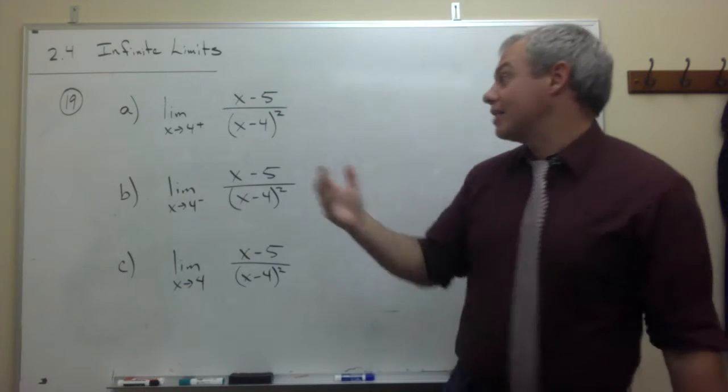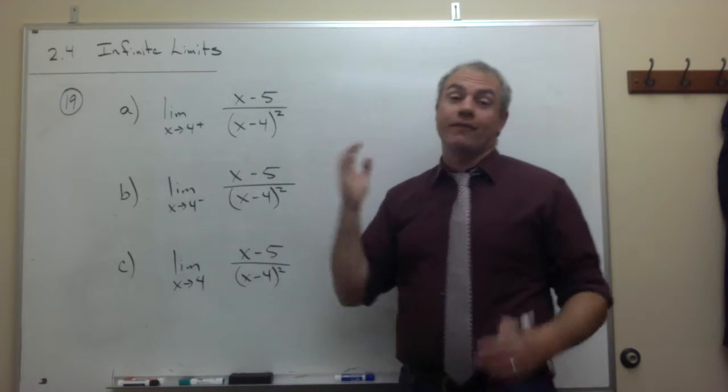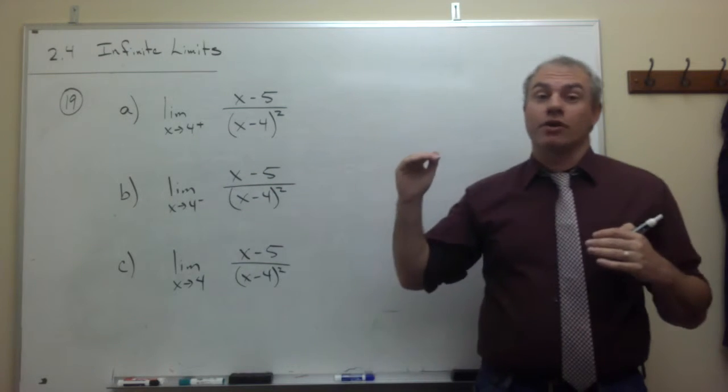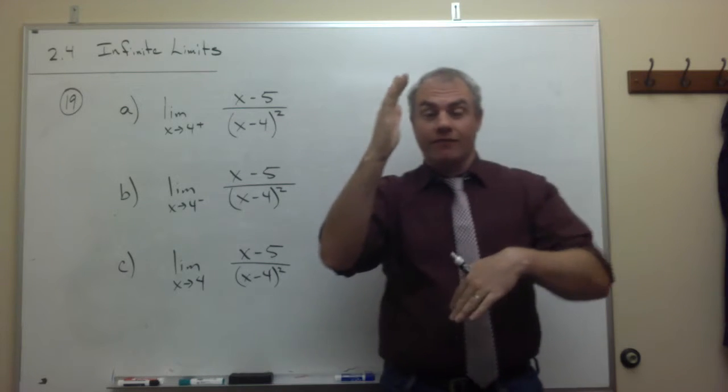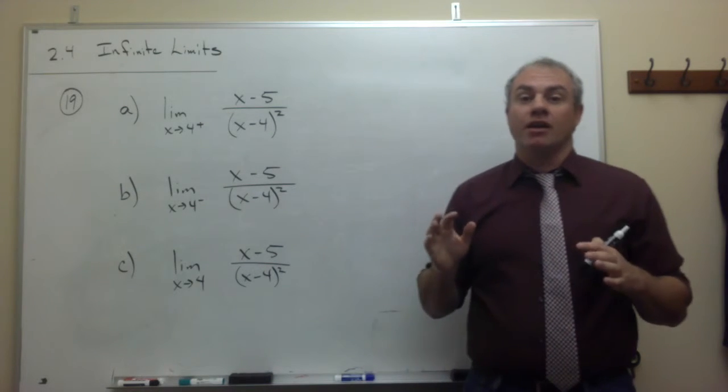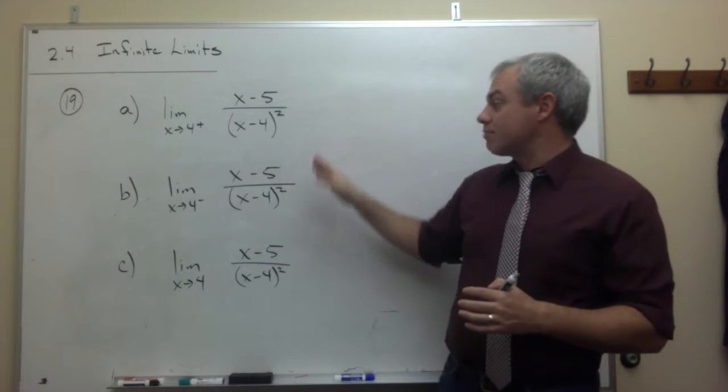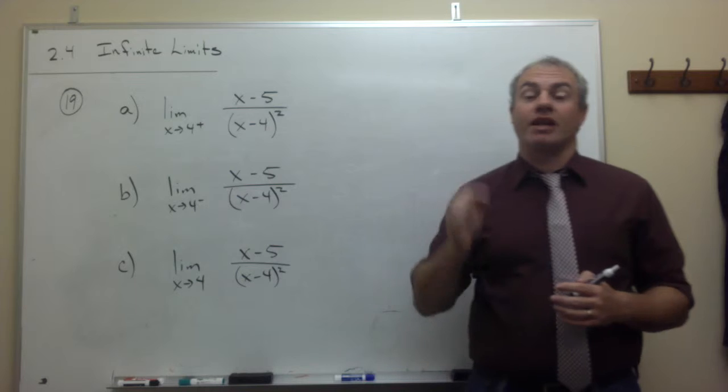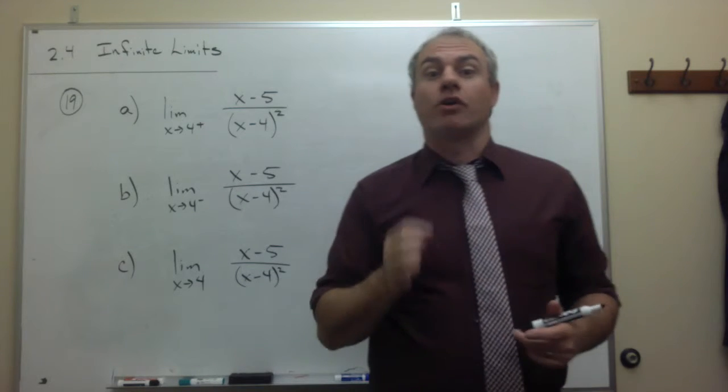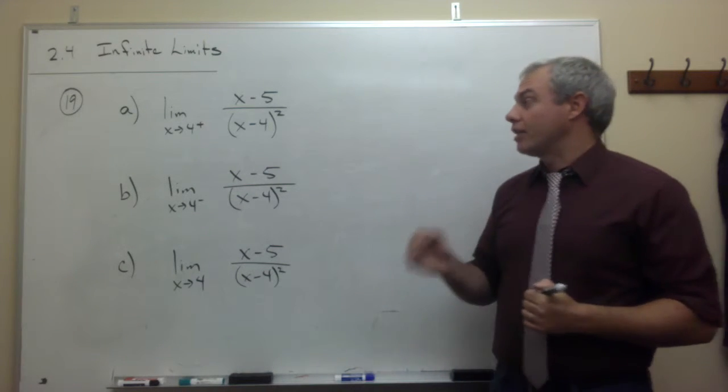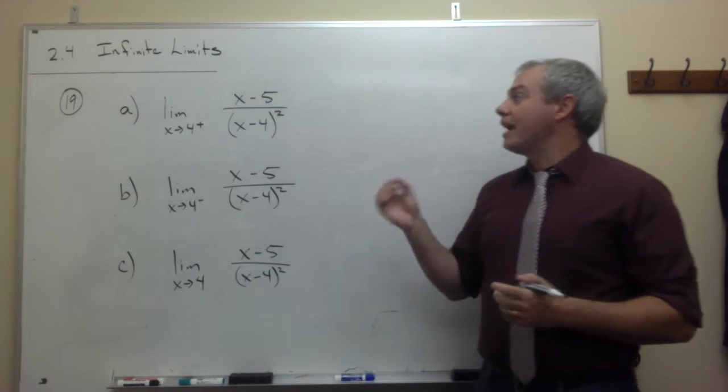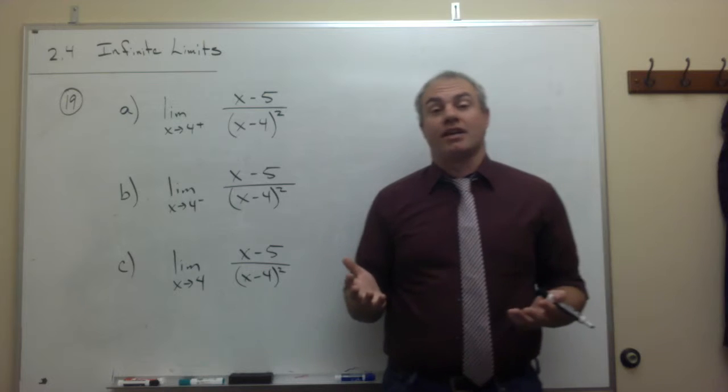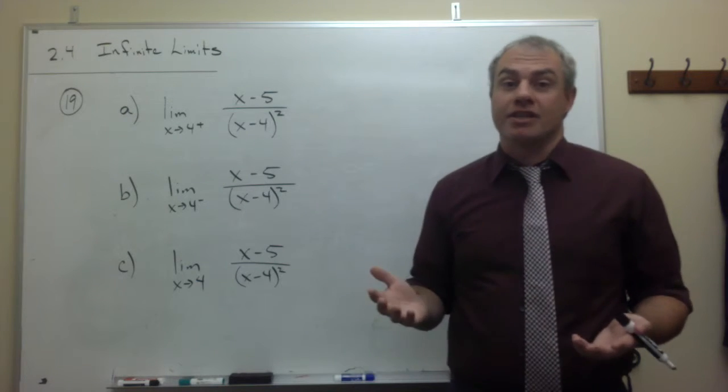Now that we've already diagnosed the problem at 4 is a vertical asymptote, we know that vertical asymptotes, things go to positive infinity or negative infinity. There's no in-between. The answer to these problems is either positive infinity or negative infinity. And I know that because I've already diagnosed the problem as a vertical asymptote. So now all that this boils down to is I have to figure out, which is it? Is it positive infinity or is it negative infinity?